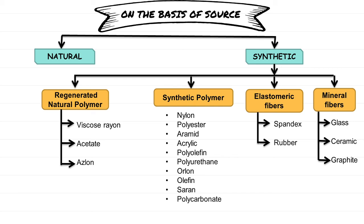Next is mineral fiber in the synthetic category — glass, ceramic, and graphite. Natural fibers we take from plants — from seeds, from plant stems, from animals. But synthetic fibers are made through a polymerization process. Synthetic man-made fibers can be changed according to our needs, and we can enhance their properties.